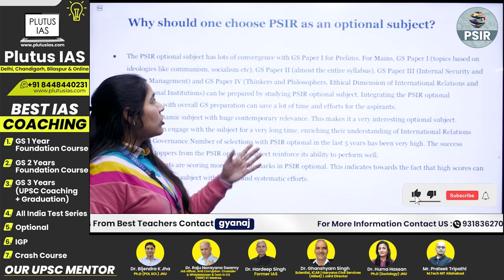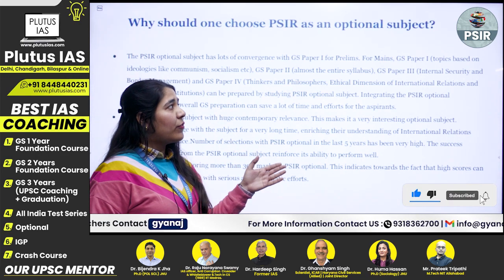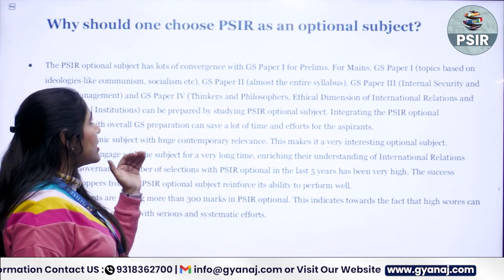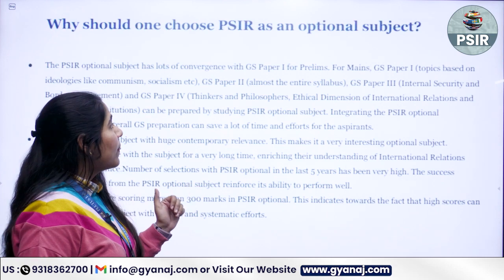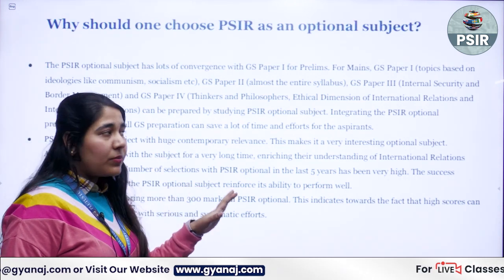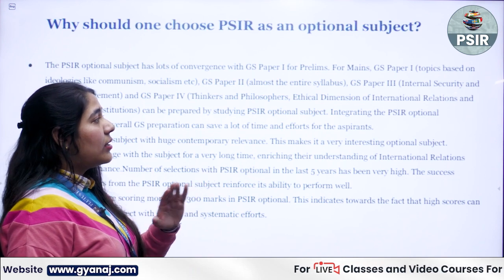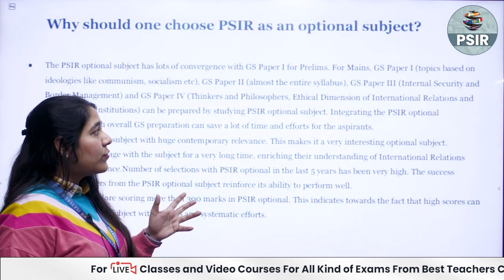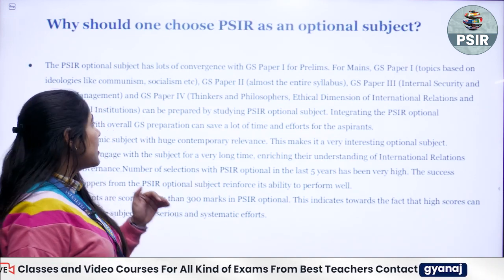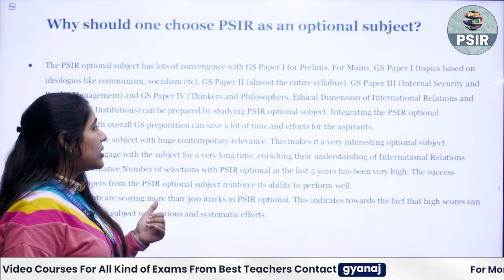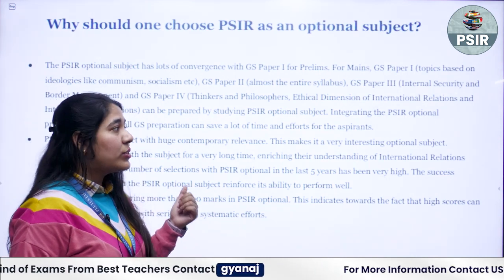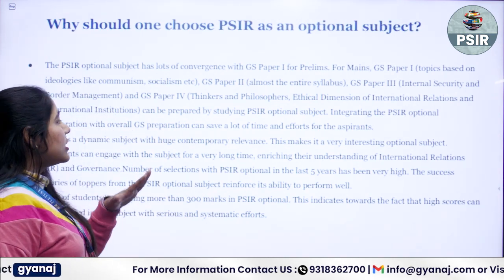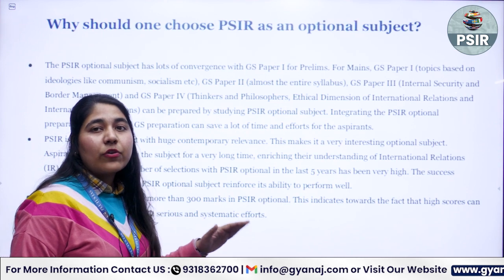The PSIR optional subject has lots of convergence with GS Paper 1 for Prelims, and for Mains: GS Paper 1 topics based on ideologies like communism, socialism, etc.; GS Paper 2, almost the entire syllabus; GS Paper 3 on internal security and border management; and GS Paper 4 on thinkers, philosophers, ethical dimensions of international relations, and international institutions.